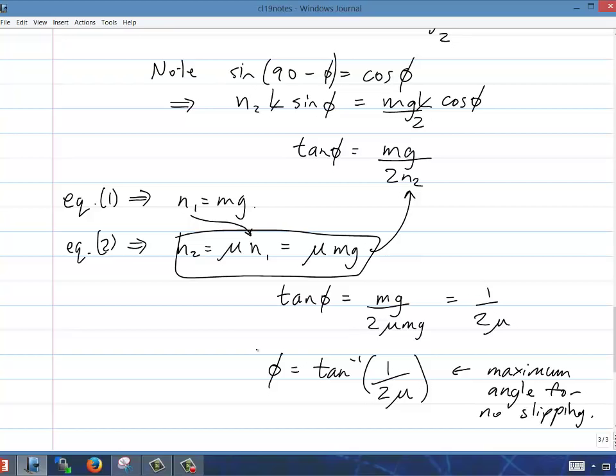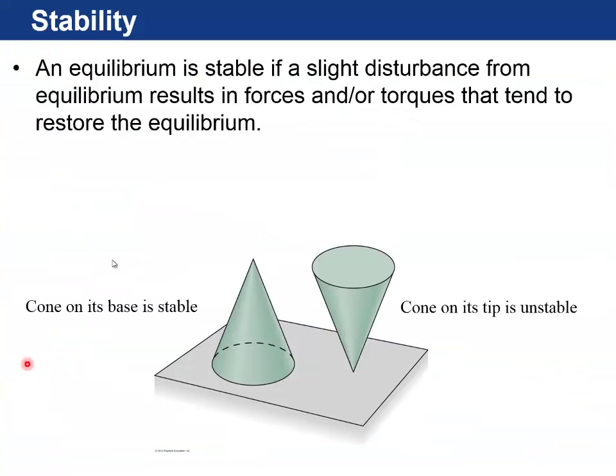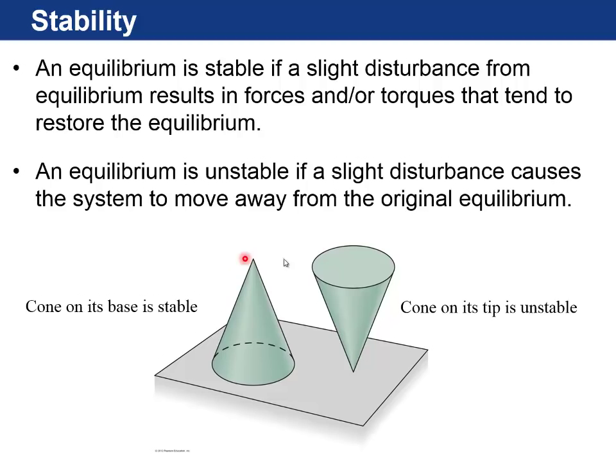The last section in Chapter 12 here is stability. An equilibrium, as we've just found, which would be when the net force and net torque is zero, an equilibrium is stable if a slight disturbance from equilibrium results in forces and or torques that tend to restore the equilibrium. So a cone on its base, if you nudge it one way or the other, it wants to fall back to the way it was. Whereas an equilibrium is unstable if a slight disturbance causes the system to accelerate away from its original equilibrium. A cone upside down here, you tip it a little bit, then the gravitational torque will take over and want to tip it more and more.